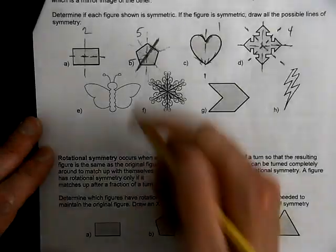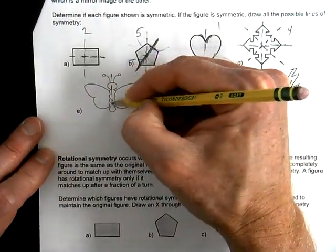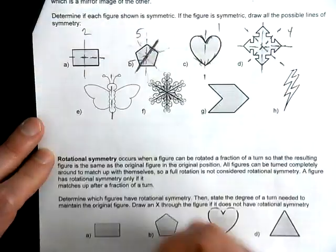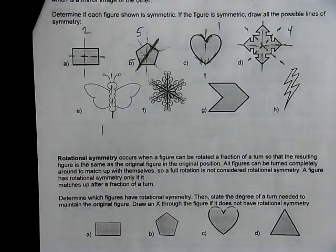A butterfly — that's pretty straightforward. We have one line of reflection.